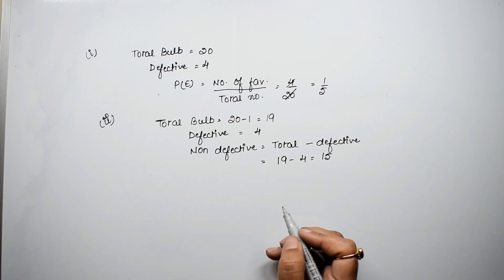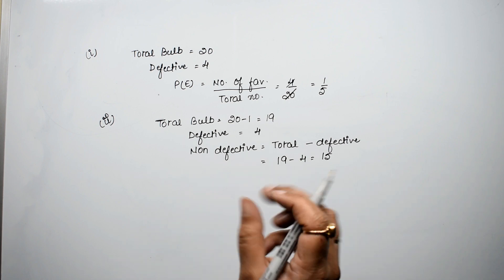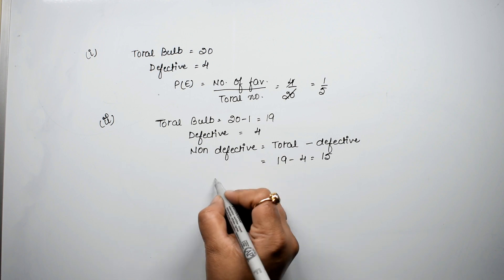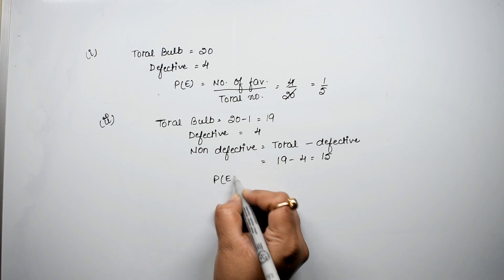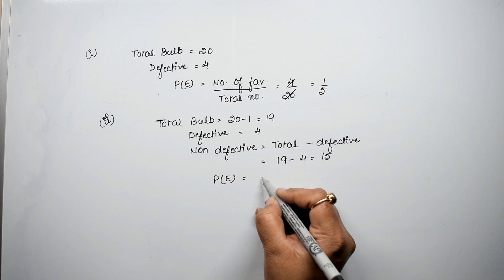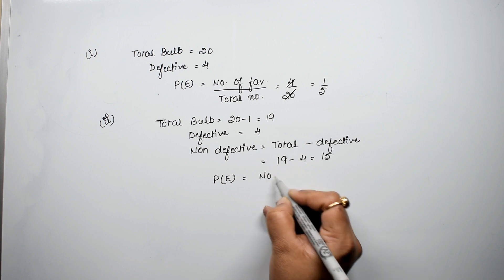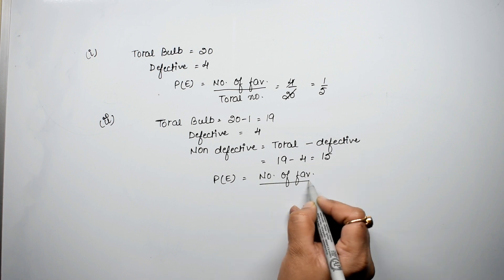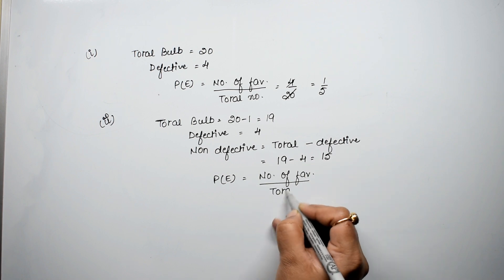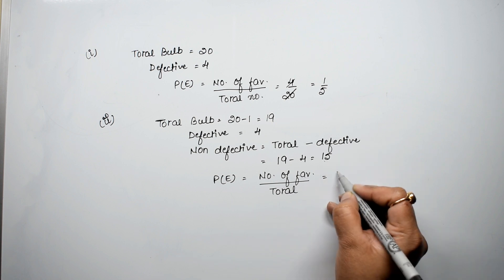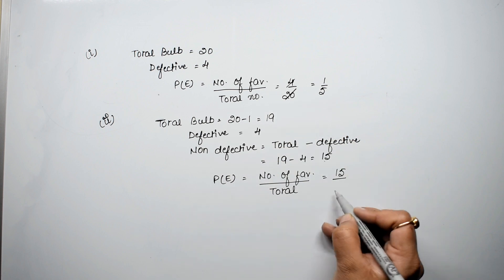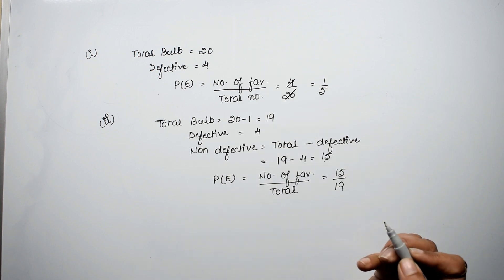What is the probability that the bulb is not defective? We will find the probability of non-defective using probability formula: number of favorable upon total. So how many non-defective were there? Non-defective is 15, and our total is now 19, so 15 upon 19 is the answer.